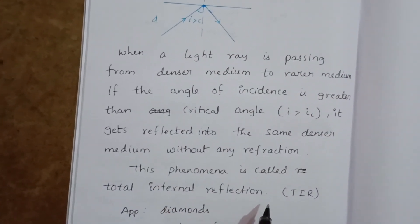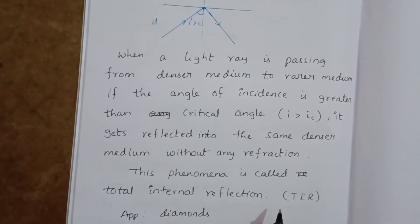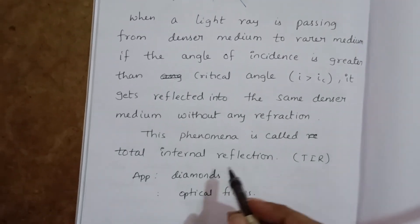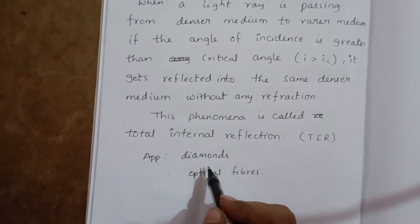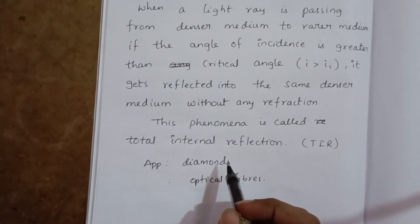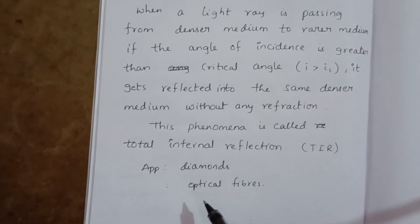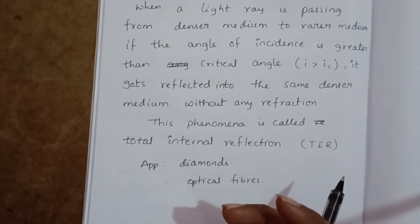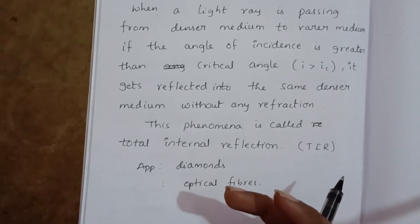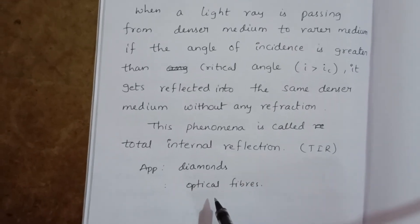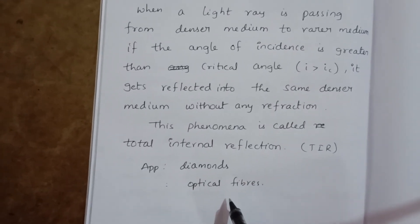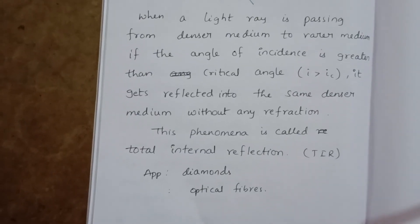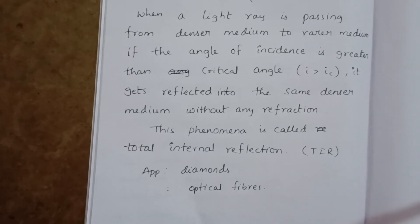Applications of total internal reflection: first, the brilliance of diamond — when a light ray enters a diamond, it undergoes multiple total internal reflections inside and shines. Second, optical fiber is also an application of total internal reflection.